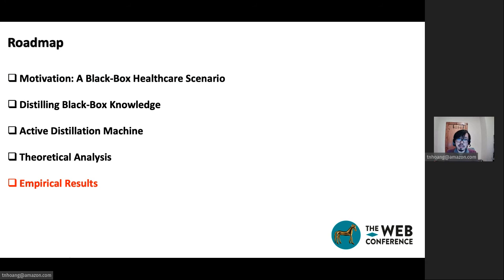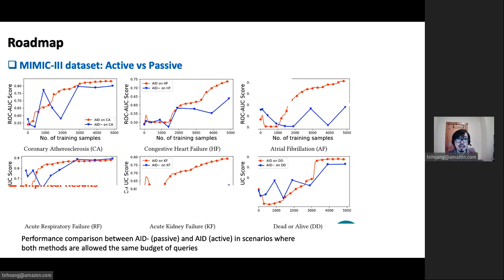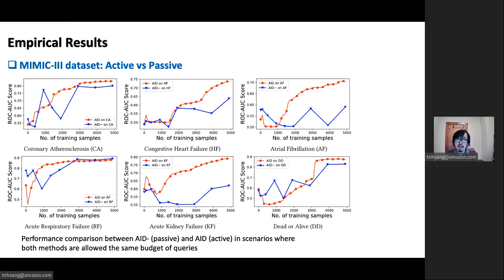Now, in the rest of this presentation, I will also evaluate our proposed framework on a practical healthcare data set. This is the MIMIC-III data set, and we are comparing the performance of our active and passive version on a variety of disease signals. And across all of these experiments, one thing that can be seen very clearly is that on the same budget allowance, the active version mostly outperforms the passive version by a significant margin. And again, this corroborates with our theoretical observation earlier that active distillation makes better use of sample information than passive distillation.